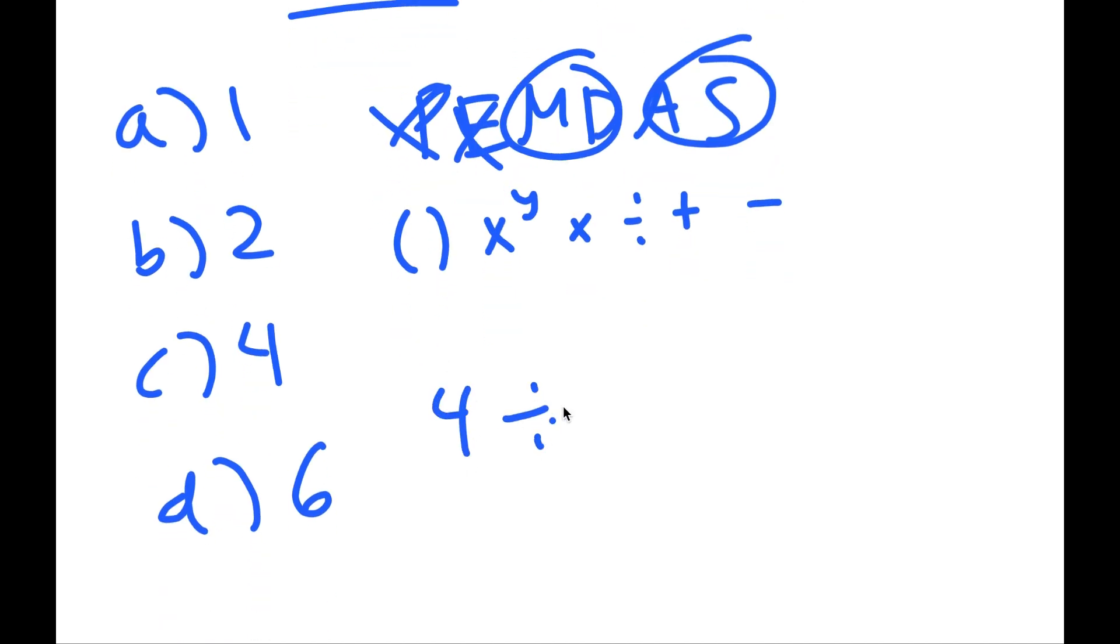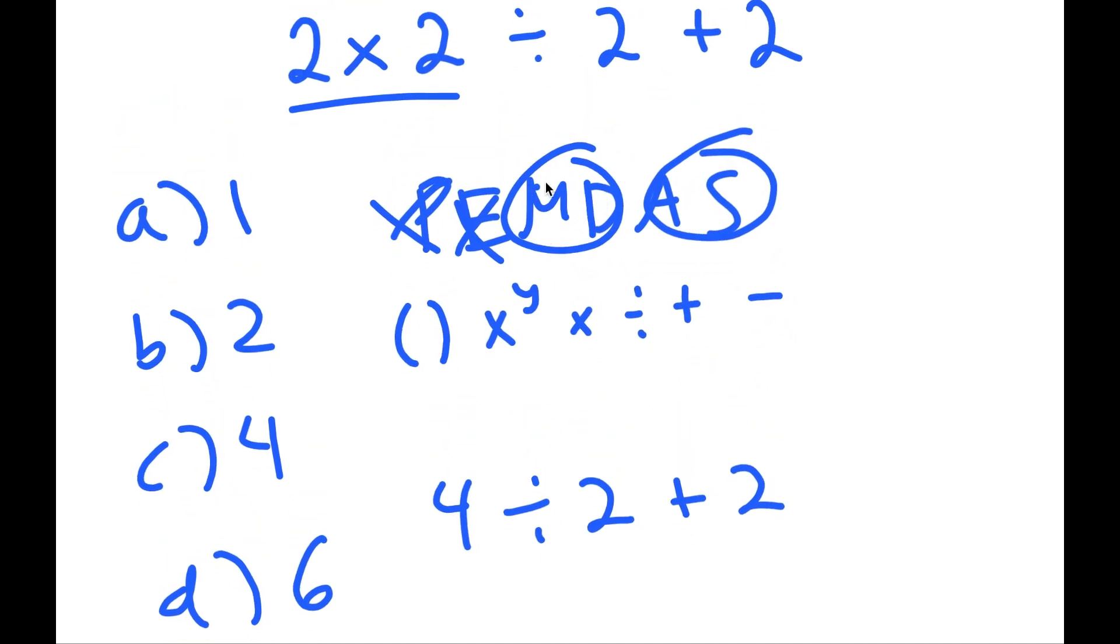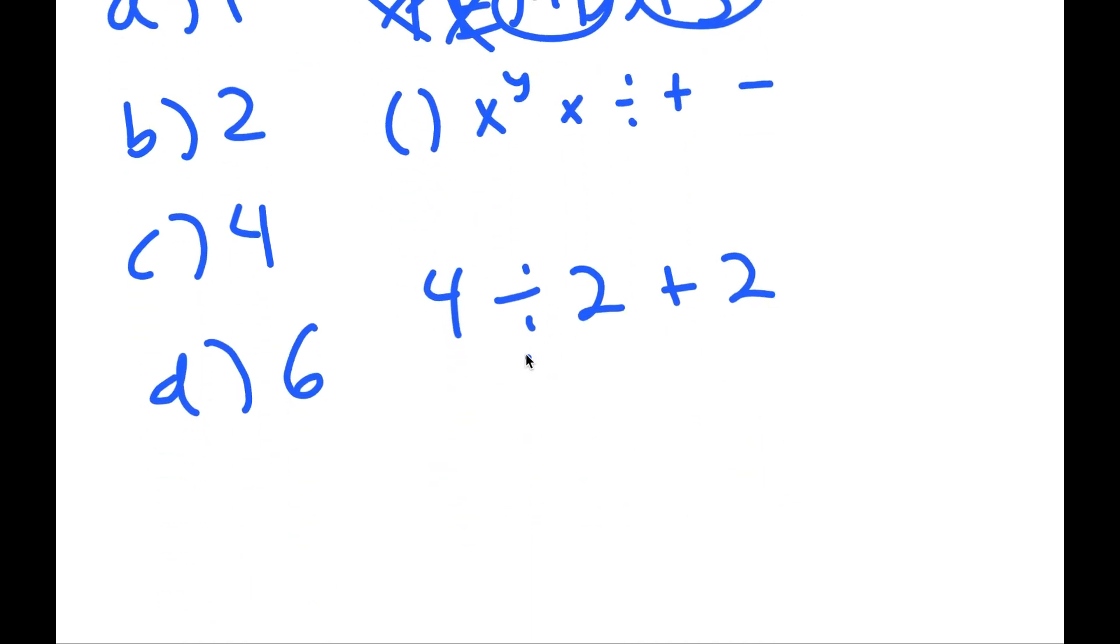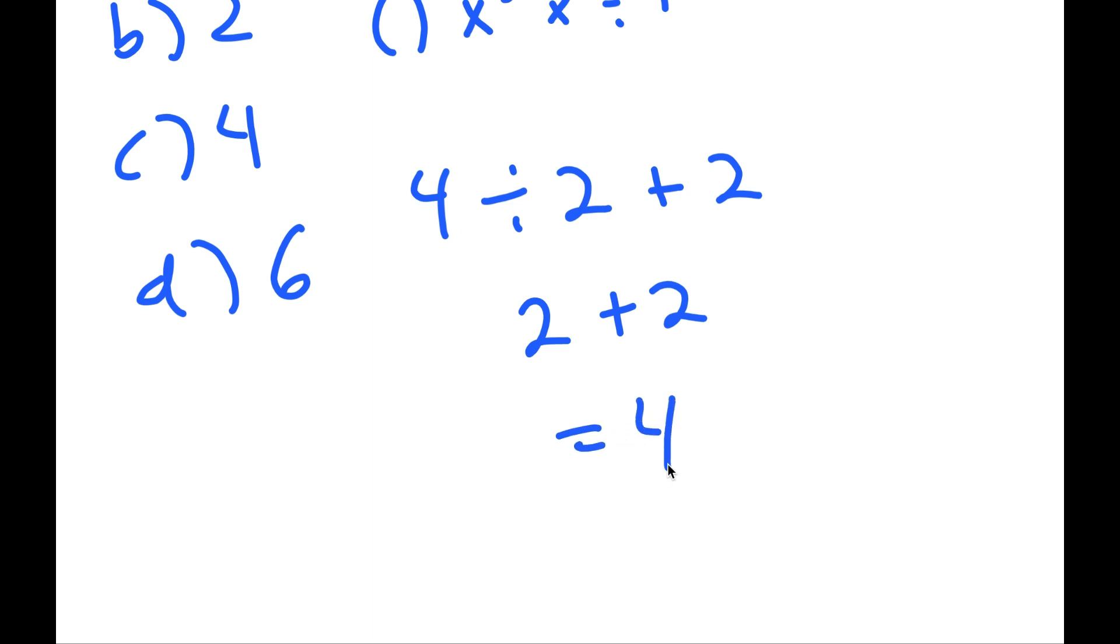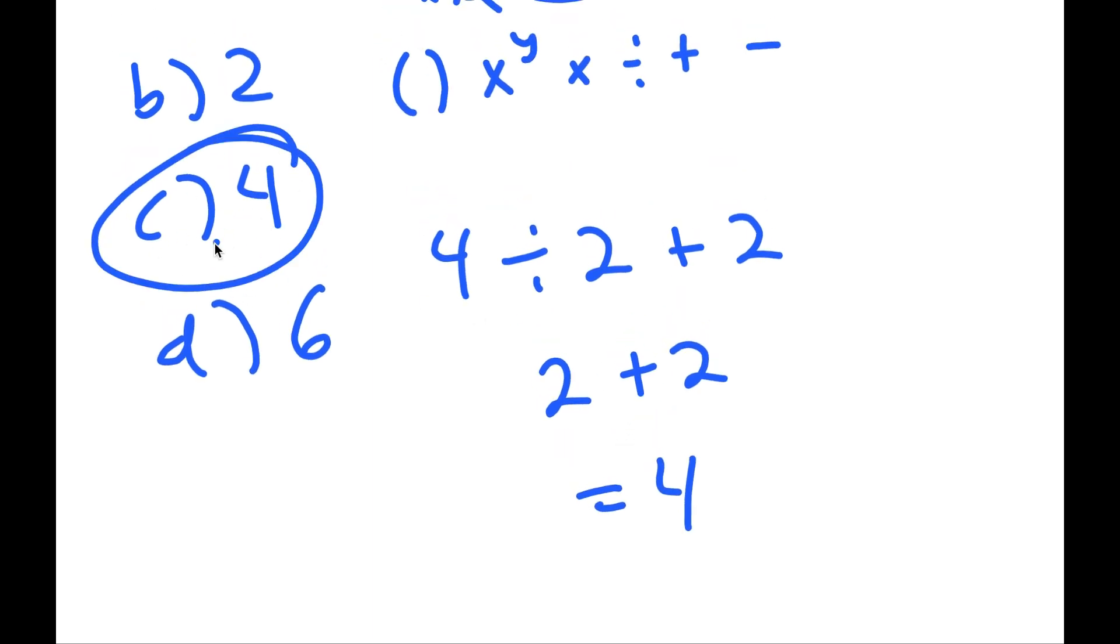So we have four divided by two plus two now, and then there's no more multiplication. Well, there is division, so we do four divided by two, and all we're left with is two plus two, which is four, meaning C is our answer.